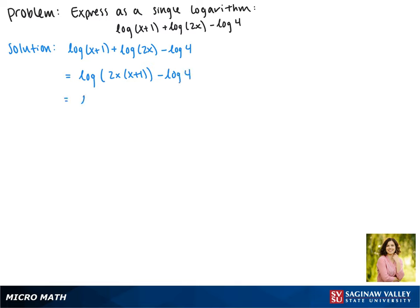Now distributing 2x this becomes the log of 2x squared plus 2x minus the log of 4.